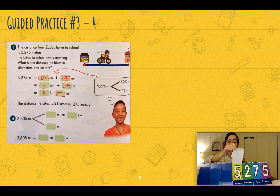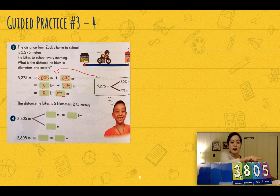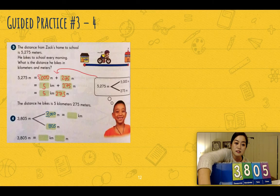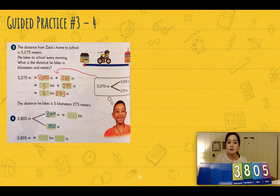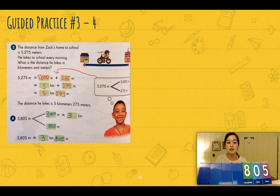Let's look at number four. Number four says three thousand eight hundred and five. Let's put it in the place value chart. To convert to kilometers and meters, we look at the thousands place. How many thousands are in three thousand eight hundred and five? There are three thousands. Three thousand is three groups of one thousand, so that is three kilometers. The leftover is eight hundred and five meters. The answer is three kilometers and eight hundred and five meters.